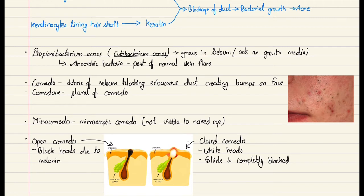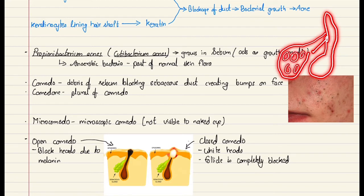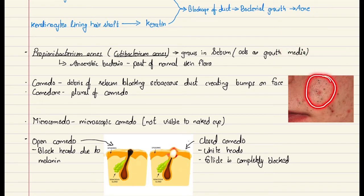There are certain terminologies that you must know. Comedo means debris of sebum blocking the sebaceous duct, creating bumps on the face. When there is a blockage of this duct and the skin becomes raised, this raised lesion of the skin is known as comedo. As you can see in this picture, these are comedos. The plural form of comedo is comedones. Microcomedo means microscopic comedo, which are not visible to the naked eye.